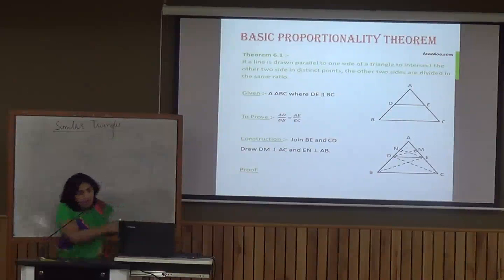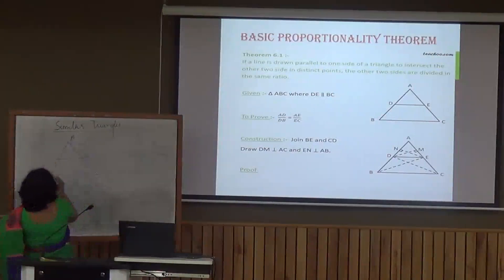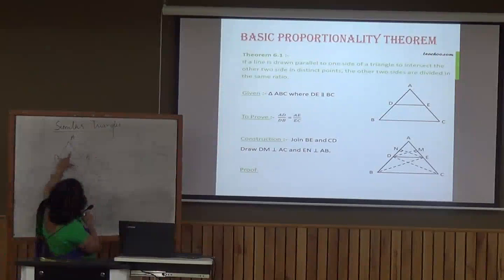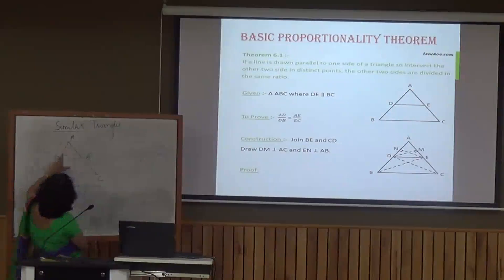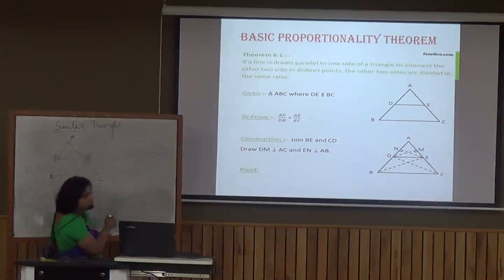So we have triangle ABC where DE is parallel to BC, and we have to show that AD/DB = AE/EC. This means DE is dividing both sides in an equal ratio.